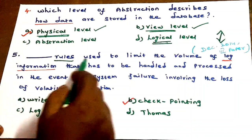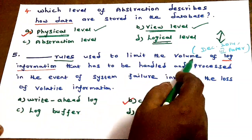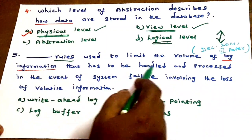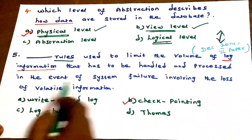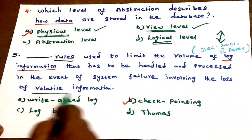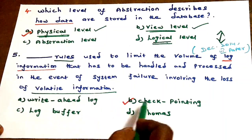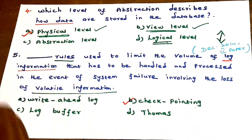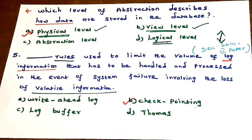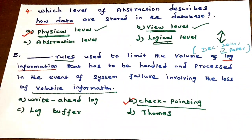Next question: dash rules used to limit the volume of log information that has to be handled and processed in the event of system failure involving the loss of volatile information. The answer is checkpointing rules. Keywords: log information, process, handle, and limit the information — that means checkpointing rules.